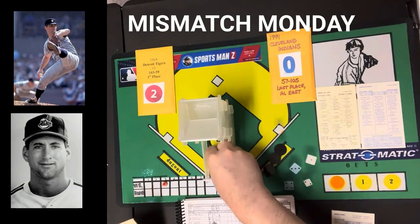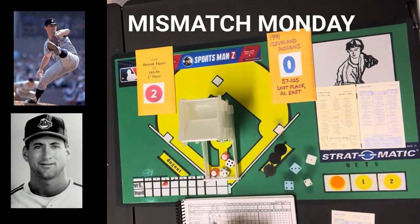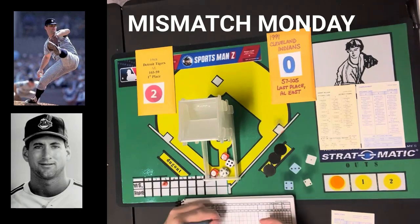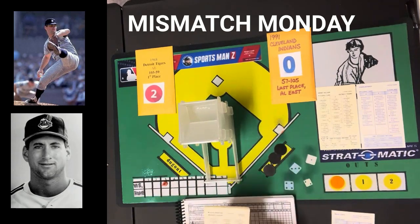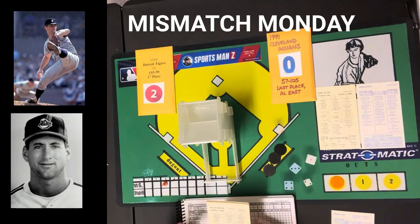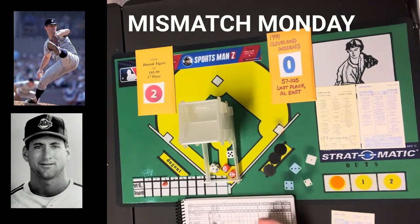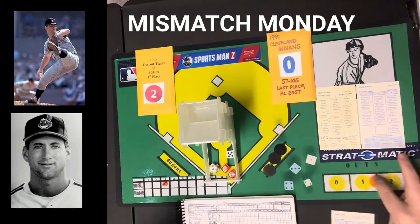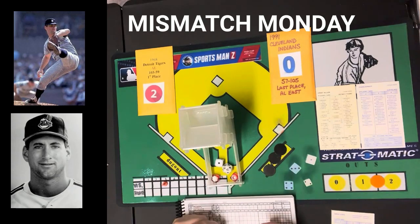Norm Cash, who had 25 home runs in 411 at-bats in 1968, gets a 4-5 — fly to center, out. The person who previously owned this eBay set wrote notes on the cards, like Willie Horton's slugging average of .543. Horton gets a 5-5 — ground ball to second, out 4-3. Bill Freehan gets a 1-7 — line out to shortstop. Nagy gets a 1-2-3 inning, the first time that's happened. 2-0, Tigers.